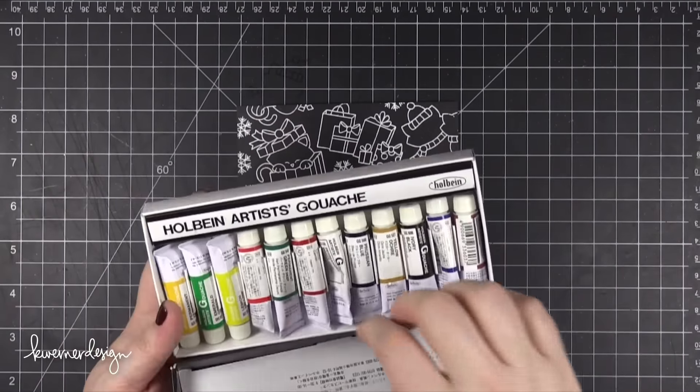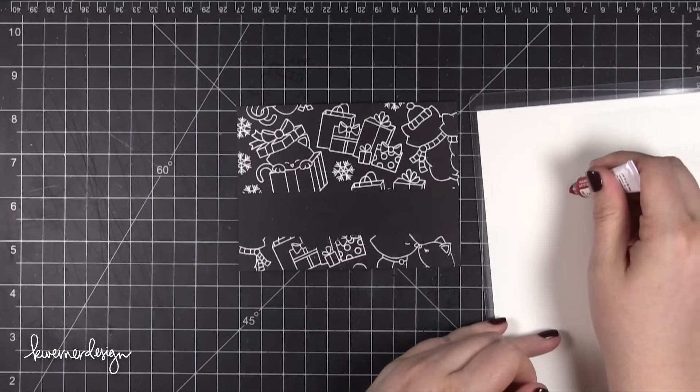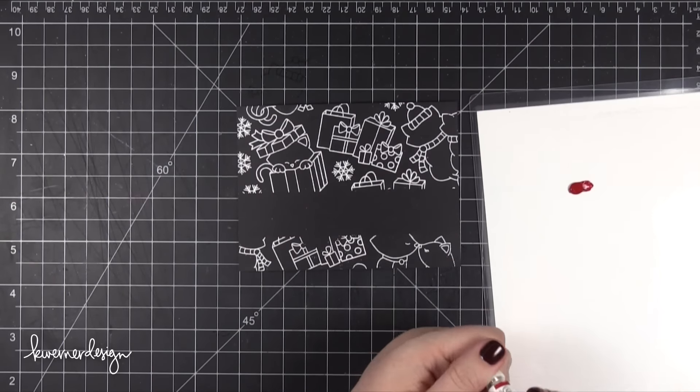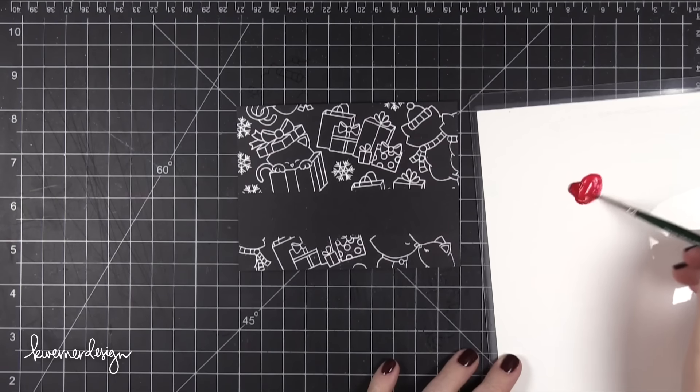I'm going to use some gouache today. You guys saw me use this in last week's video. Gouache is a little bit like a tube of watercolor paint except that it's opaque. So I'm going to add just a little bit of water to this red color to get that paint moving a little bit more.